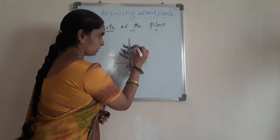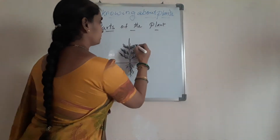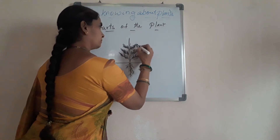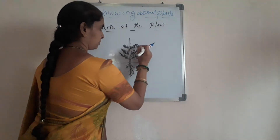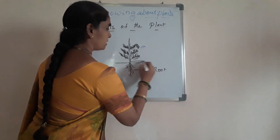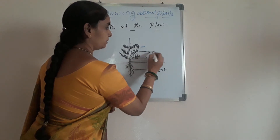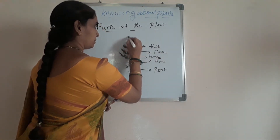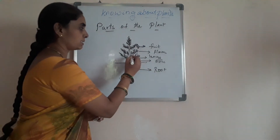See here children. In this rough diagram of plants I am showing you the different parts. This is the root of the plant, this is the stem, these are the leaves, this is the flower, and this forms the fruit of the plant. You can easily observe the different parts of the plant through this diagram.